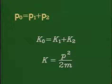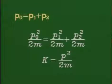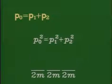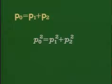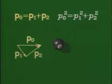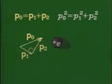Since the masses are the same, P0 squared equals P1 squared plus P2 squared. But that's the Pythagorean theorem for right triangles. And as a result, P1 is perpendicular to P2.